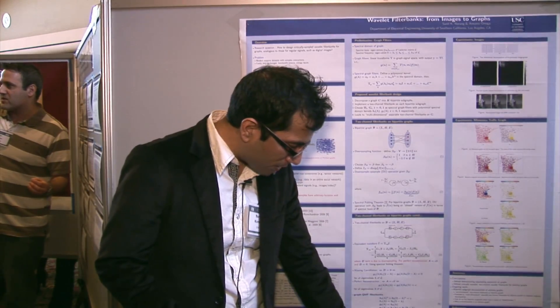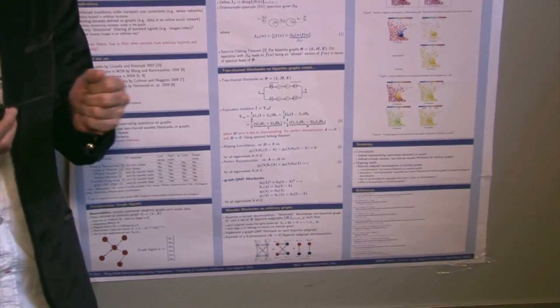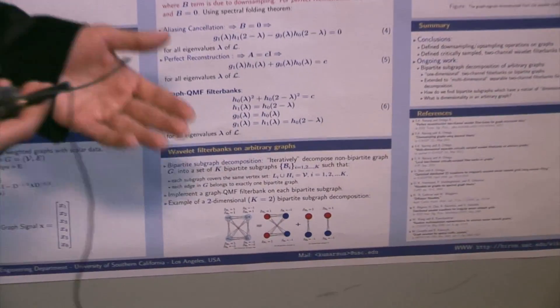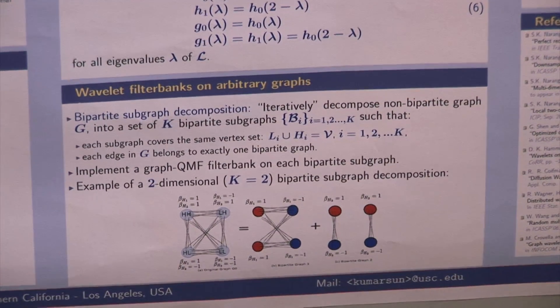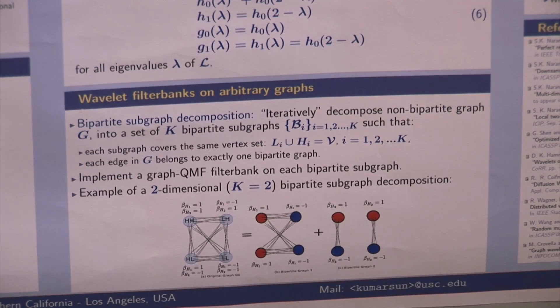One coloring scheme, for example, where we assign two coloring on the graph and remove all the edges corresponding to those two coloring. Then in the subsequent graph, we choose a new coloring and we decompose it. So this is one example of bipartite subgraph decomposition for a non-bipartite graph.